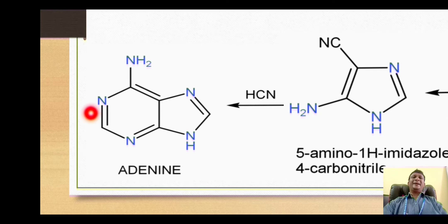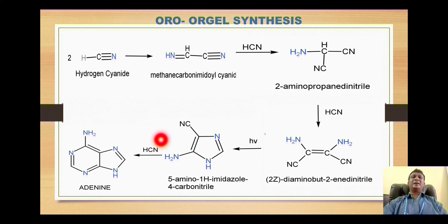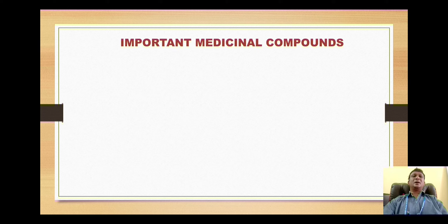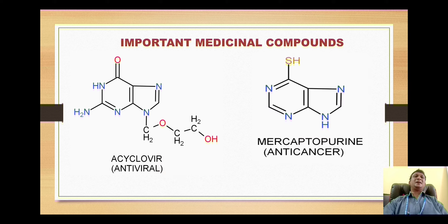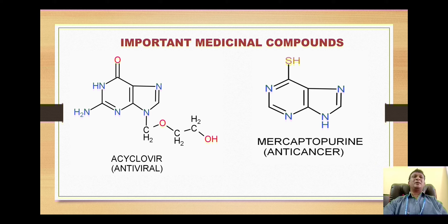In this way there is generation of the purine derivative called adenine. So the Traube synthesis and Oro-Augel synthesis are the two very important syntheses of the heterocycle purine. The first important medicinal compound containing purine is acyclovir, which is an antiviral agent. The second compound is mercaptopurine, where the mercapto group is attached at position number 6, so it is called 6-mercaptopurine and it is a very potent anticancer drug. That is all about the synthesis and medicinal compounds of purine.